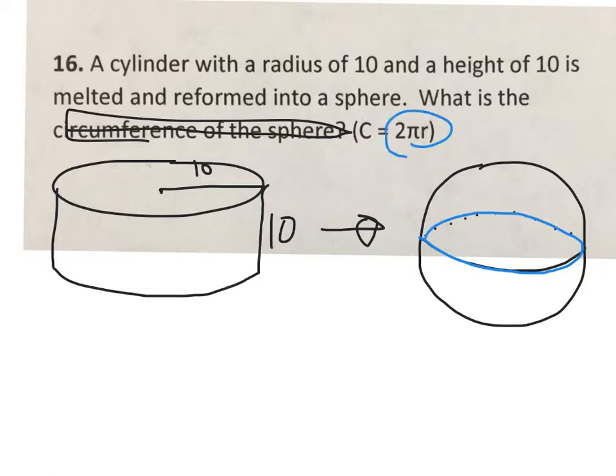As we know, the circumference formula is 2πr, so in order to calculate the circumference of the sphere, we have to know the radius of the sphere. And in order to know the radius of the sphere, we have to know the volume of the sphere. So we first start with volume.